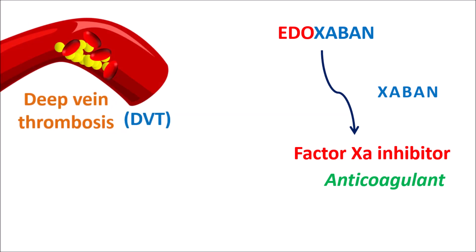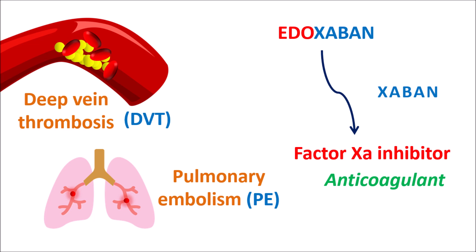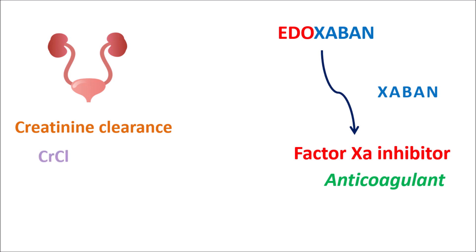One condition where Edoxaban can be given is deep vein thrombosis, and it can also be given for pulmonary embolism where thrombus breaks into small fragments and blocks blood vessels within the pulmonary system. However, kidney functionality should be thoroughly assessed before administering this drug — particularly creatinine clearance. In people with creatinine clearance greater than 95 ml per minute, Edoxaban is ineffective. Only those with creatinine clearance less than 95 ml per minute will benefit from Edoxaban.